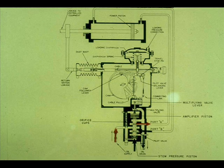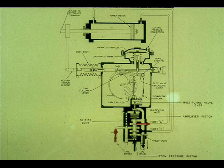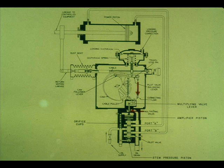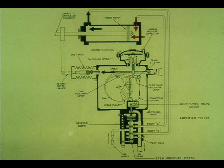Now let's see what happens upon an increase in the instrument signal. The connecting link lowers. This opens the multiplying valve. The amplifier piston is forced up. Port A is connected to supply. Port B is connected to drain. The power piston moves right to left, closing the valve.